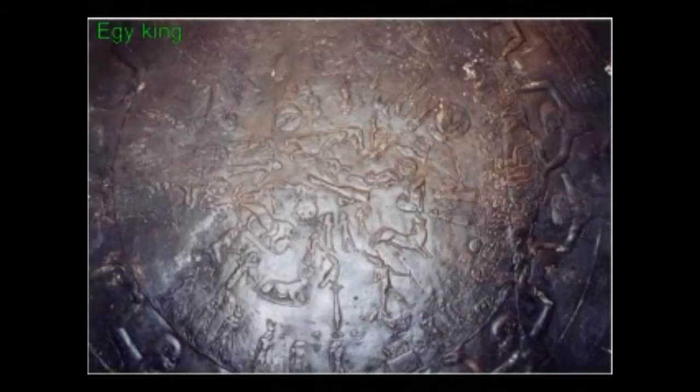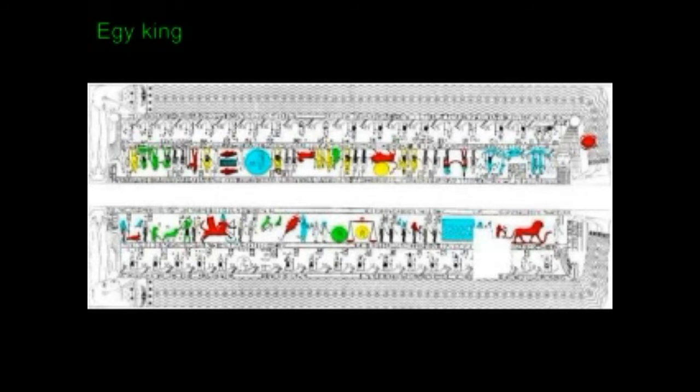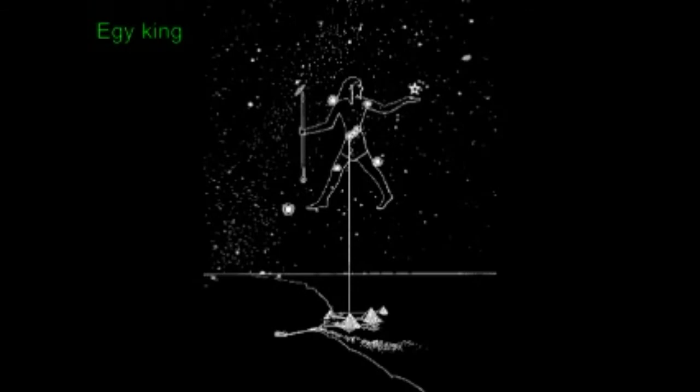The ancient Egyptians began their day with a new sunrise. They divided the daytime into 12 hours, numbered from 1 to 12, and the night into another 12 hours, numbered from 13 to 24. The hours were not all the same length — in summer, the hours of the day were longer than the hours of the night, and of course the reverse in winter.